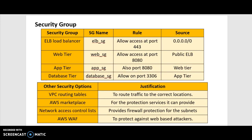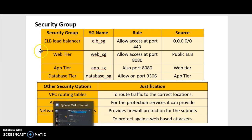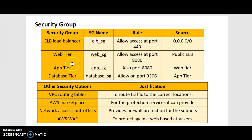The security groups are as follows. I will allow access on port 443 for my load balancer that's going to be balancing from the internet, because port 443 is usually used for SSL connections, which are a lot safer. This is also why I'm using port 3306 for the database tier, because that port is synonymous with MySQL.